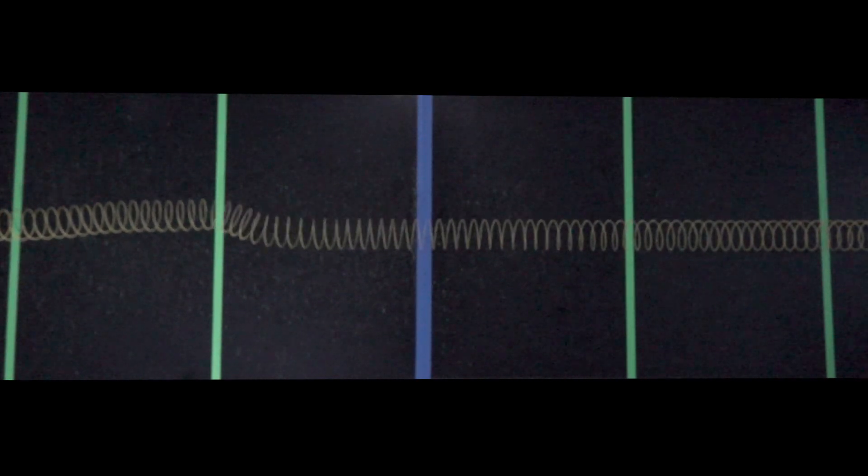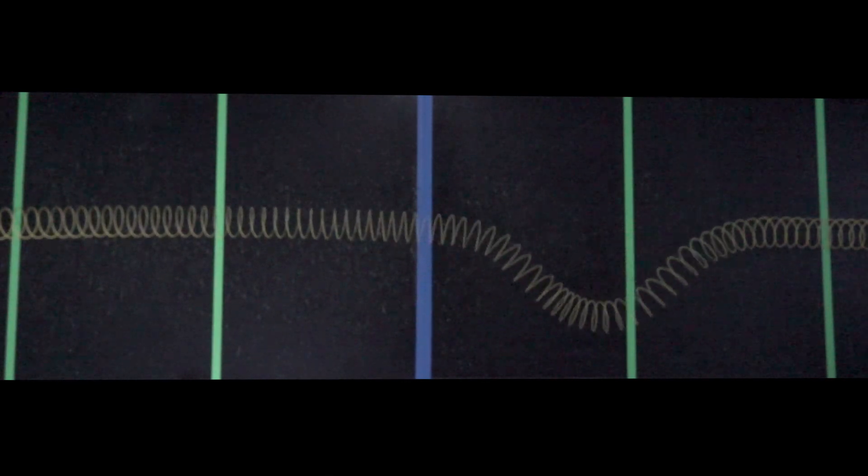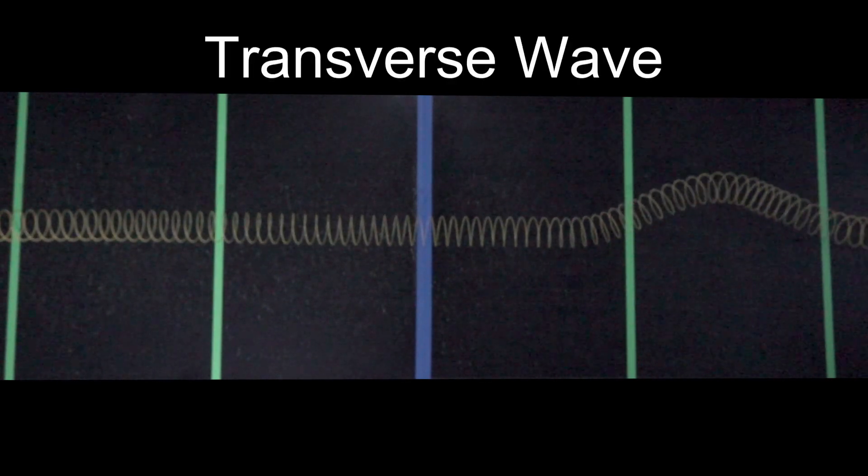The first wave that we will observe is generated by a disturbance that is perpendicular to the motion of the wave. This type of wave is referred to as a transverse wave.